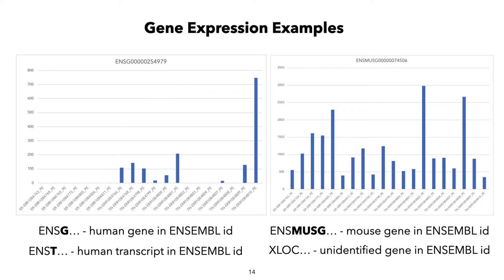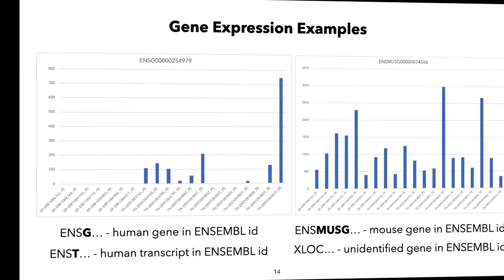To understand what each individual gene looks like, we can plot the numbers in a bar plot. Here you have a couple of examples of a gene that has some level of expression in several different samples, or across all of the samples we have in our data.